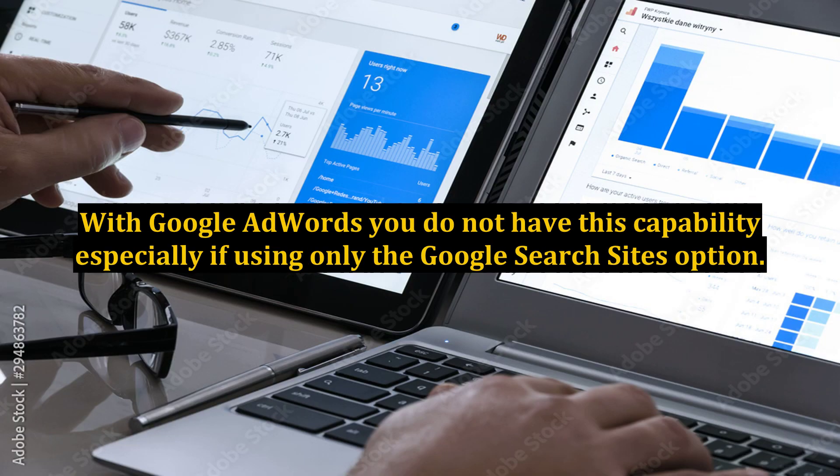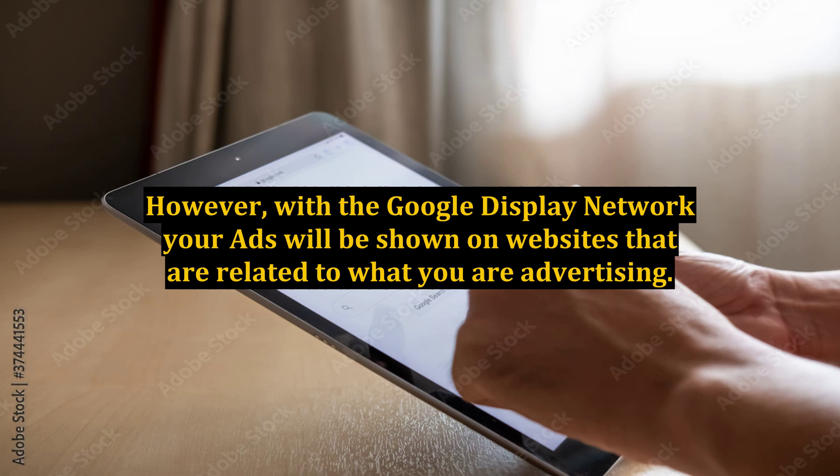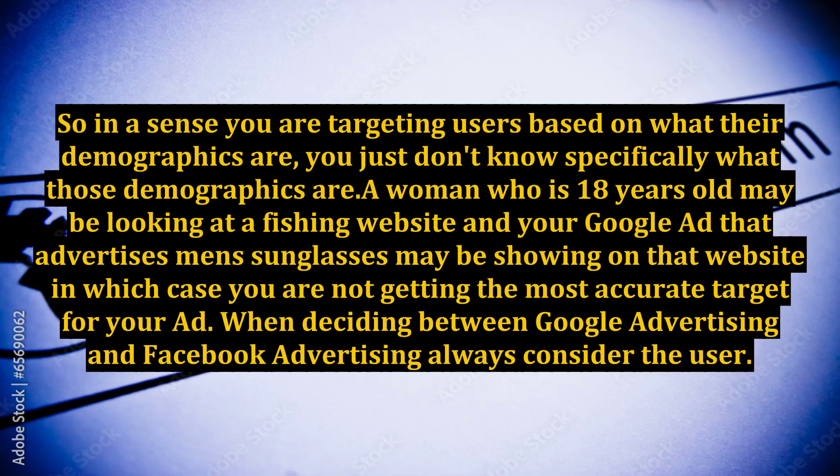With Google AdWords you do not have this capability, especially if using only the Google search sites option. However, with the Google Display Network your ads will be shown on websites that are related to what you are advertising. So in a sense you are targeting users based on what their demographics are, you just don't know specifically what those demographics are. A woman who is 18 years old may be looking at a website and your Google ad that advertises men's sunglasses may be showing on that website, in which case you are not getting the most accurate target for your ad.